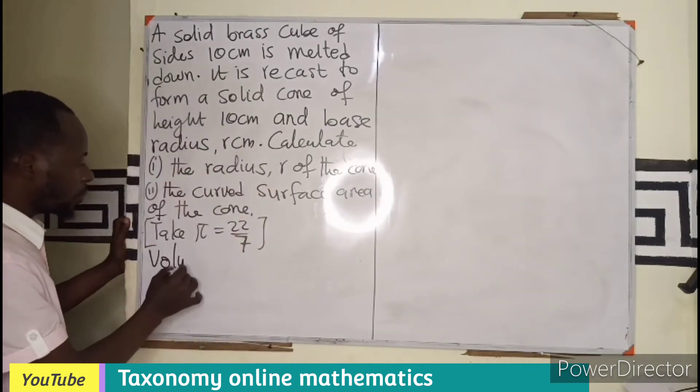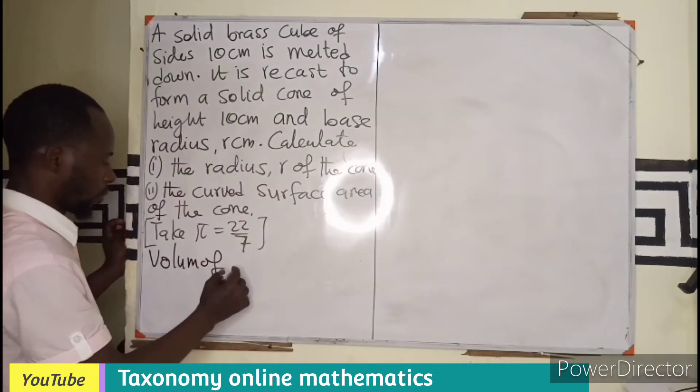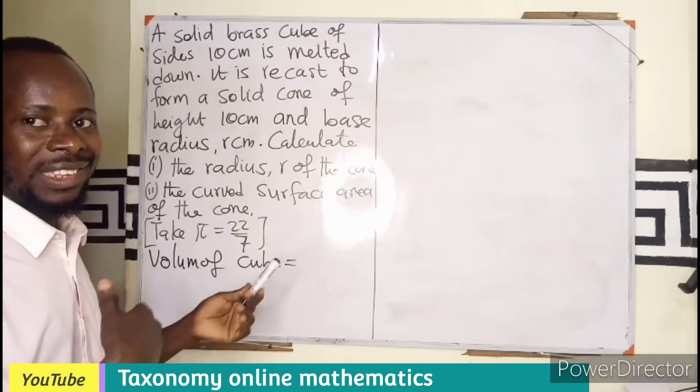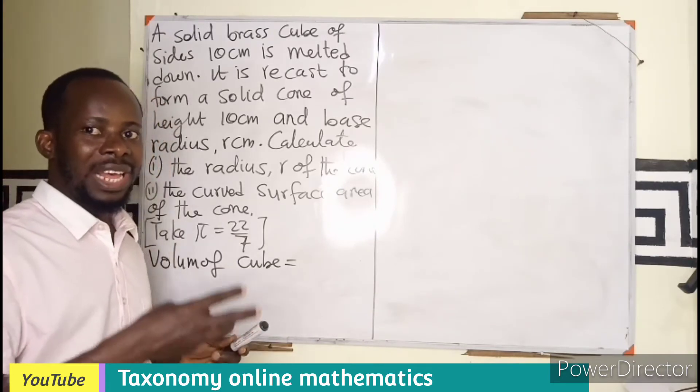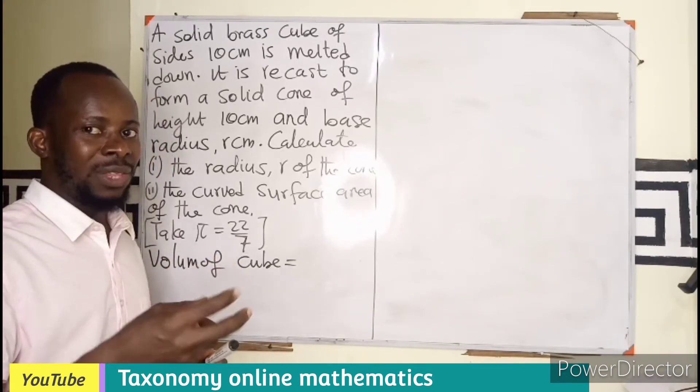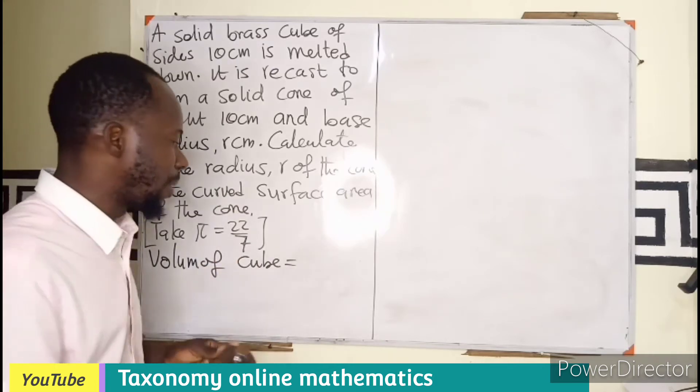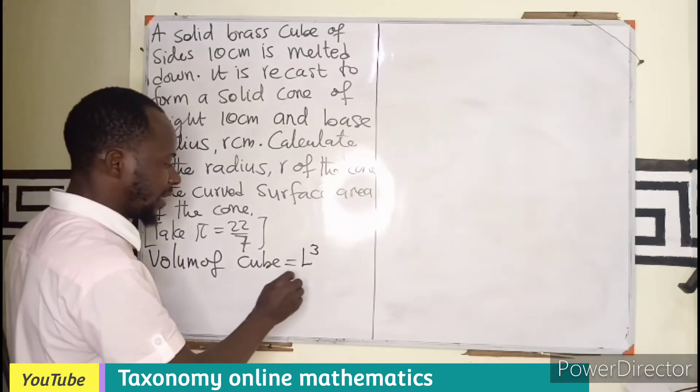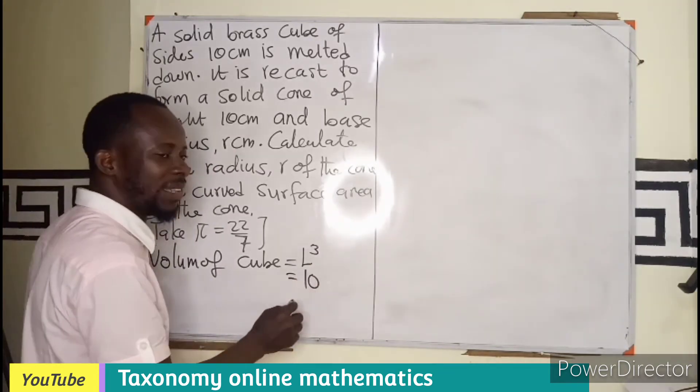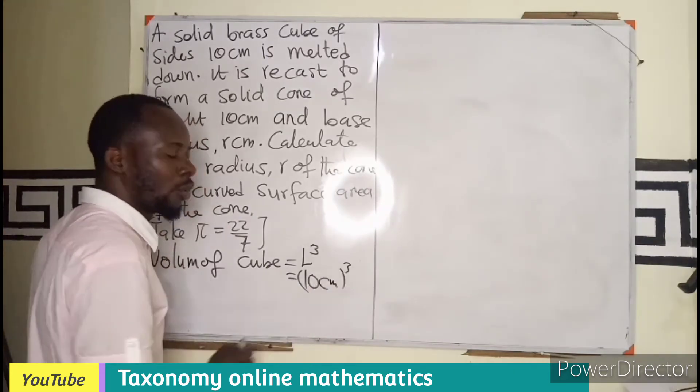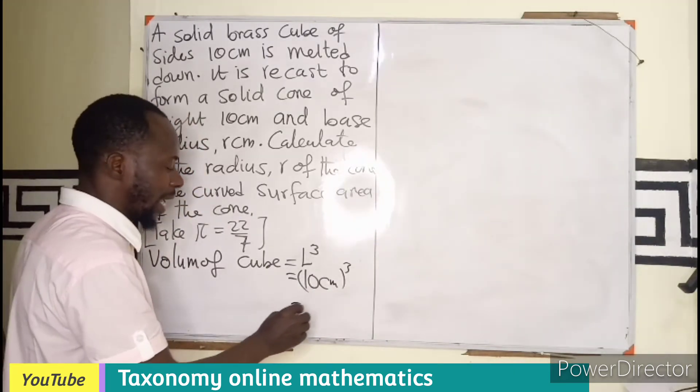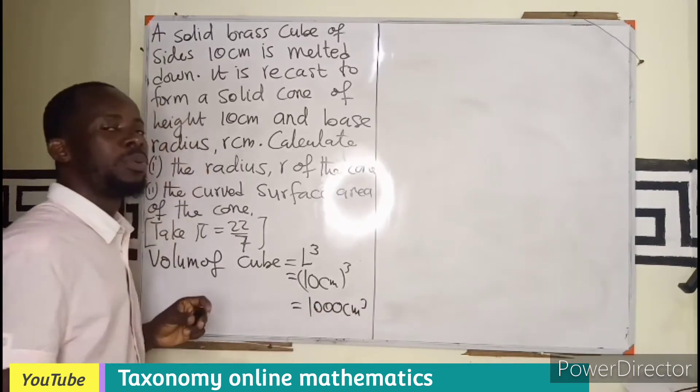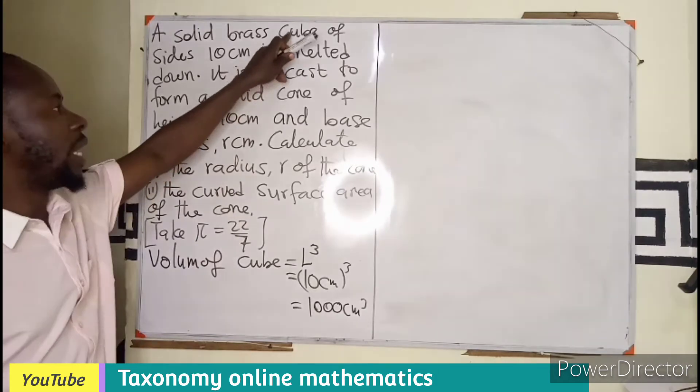So I will start by finding the volume of each of them. We know a volume of a cube is a three-dimensional shape. It has the length, breadth and height all being the same. So L cube, which in this case is going to be 10 centimeters for all of them. That means 10 times 10 times 10 equals 1,000 centimeter cube. That is the first volume of the cube.